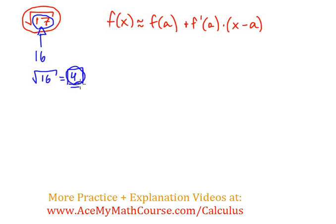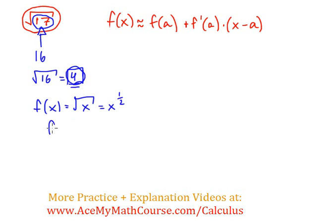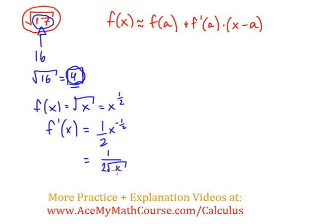With this knowledge and the fact that a equals 16, let's continue. First, f of x is the square root of x, which is equivalent to x to the power of one half. Taking the derivative, I bring down the exponent to get one half times x to the power of negative one half, subtracting 1 from the exponent. I can rewrite this as 1 over 2 times the square root of x.